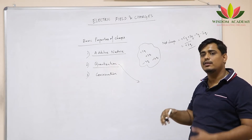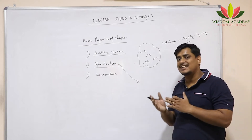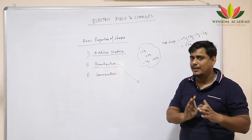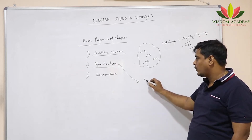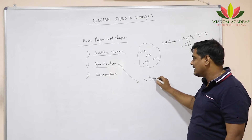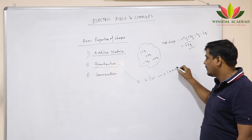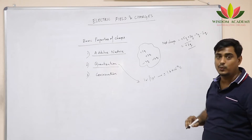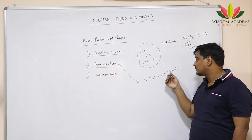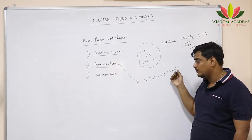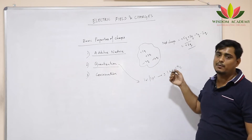Now let us talk about quantization. Quantization means that the total charge carried by a particular surface is an integral multiple of the charge carried by each particle. One electron or one proton carries a charge of 1.6 × 10⁻¹⁹ coulomb. An electron has a charge of −1.6 × 10⁻¹⁹ coulomb and a proton has a charge of +1.6 × 10⁻¹⁹ coulomb.